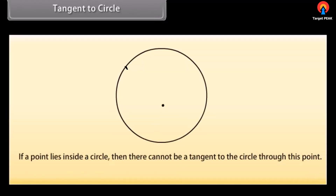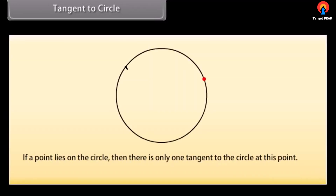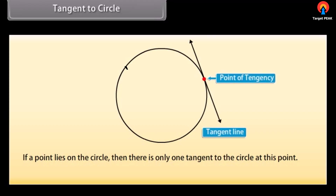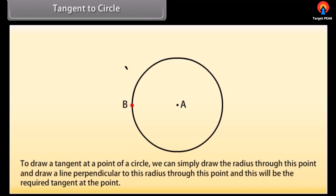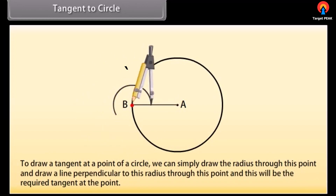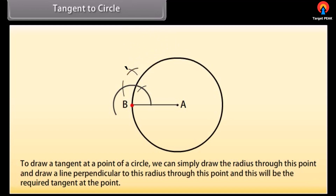Tangent to a circle: If a point lies inside a circle, then there cannot be a tangent to the circle through this point. If a point lies on the circle, then there is only one tangent to the circle at this point; the tangent is perpendicular to the radius through this point. Therefore, to draw a tangent at a point of a circle, we can simply draw the radius through this point and draw a line perpendicular to this radius through this point, and this will be the required tangent at that point.